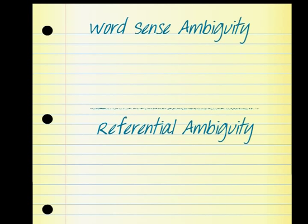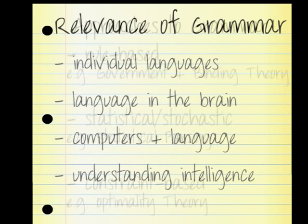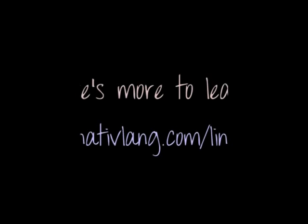It's time to conclude this rough survey of parse trees. The topic of grammars is deep, contentious, and central to questions about the structure of individual languages, the human brain's ability to acquire language, computer processing of language, and artificial intelligence. There are many linguistic models of grammar, including other rule-based approaches, statistical approaches based on large amounts of natural language data, and approaches that see language as the outcome of competing ranked viable constraints instead of inviolable rules. But those are all topics for another day. Thanks for learning with me.